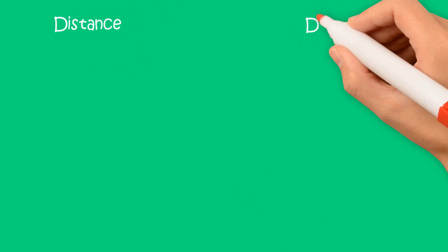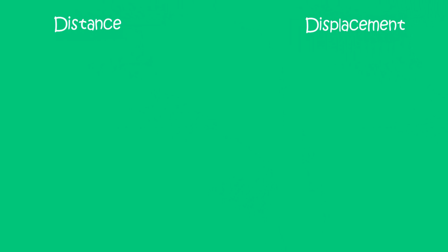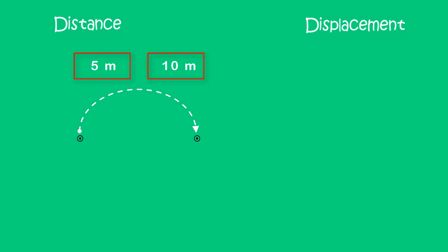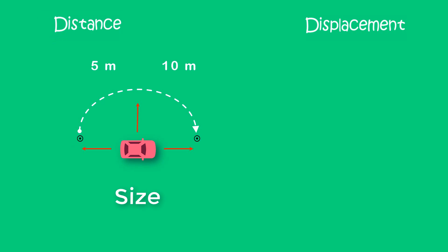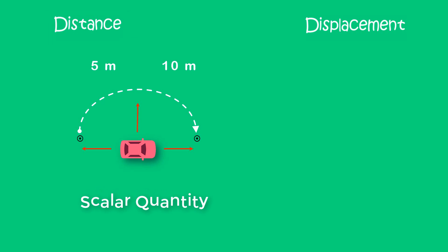Now let me clarify the concept of distance and displacement. We know that when we say 5 meters or 10 meters, they are the distance or length between 2 points. But remember that we do not know in which direction — 5 meters in this direction, this direction, or this direction. Distance only gives us the size or magnitude of space between 2 points or locations. Distance does not talk about direction. Hence distance is a scalar quantity.